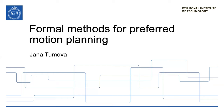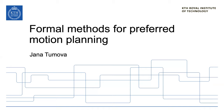I will be talking about formal methods for preferred motion planning today. I'd like to start with talking about formal methods for motion planning in general — why we use formal methods and why it's a good idea to join those two topics. We'll go through that quickly, then look at formal methods for provably correct motion planning, and from that move on to preferred motion planning — roughly, planning of motion that is preferred among other motions.